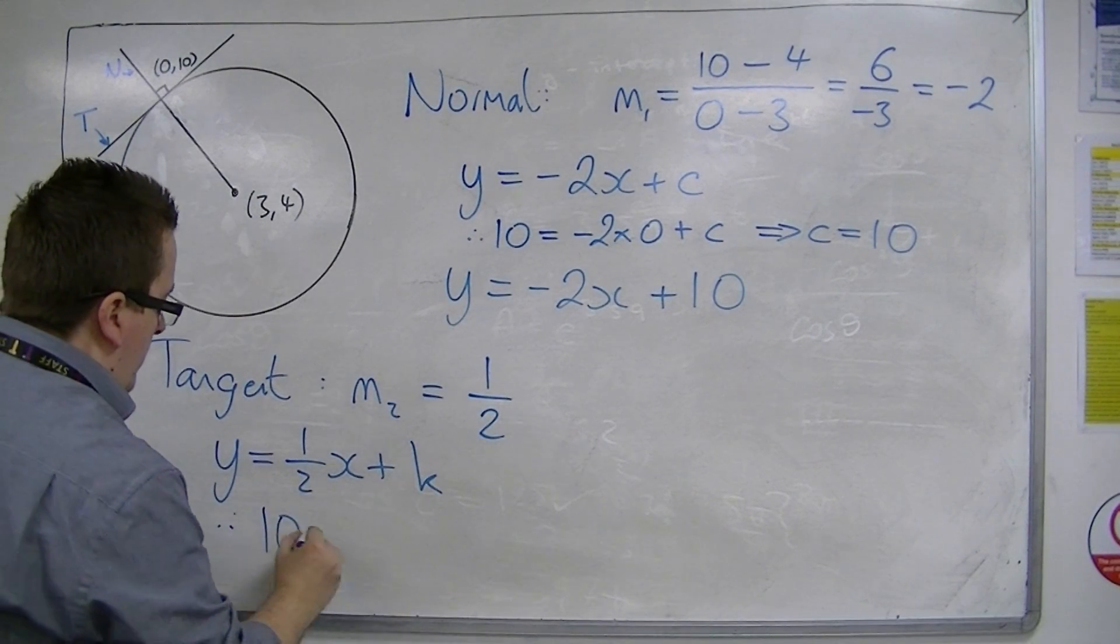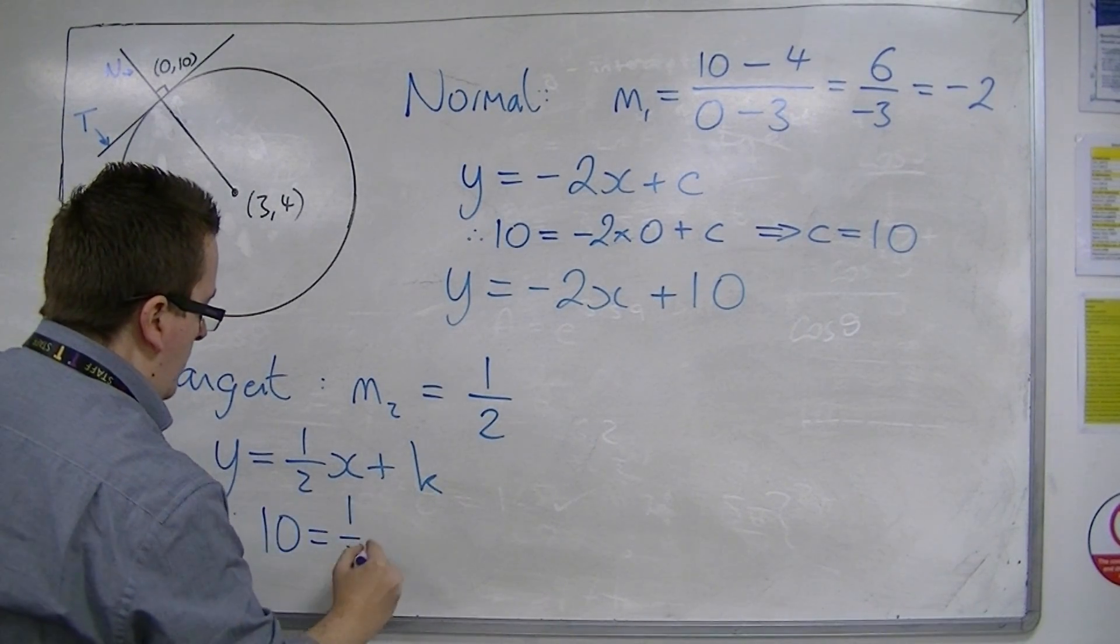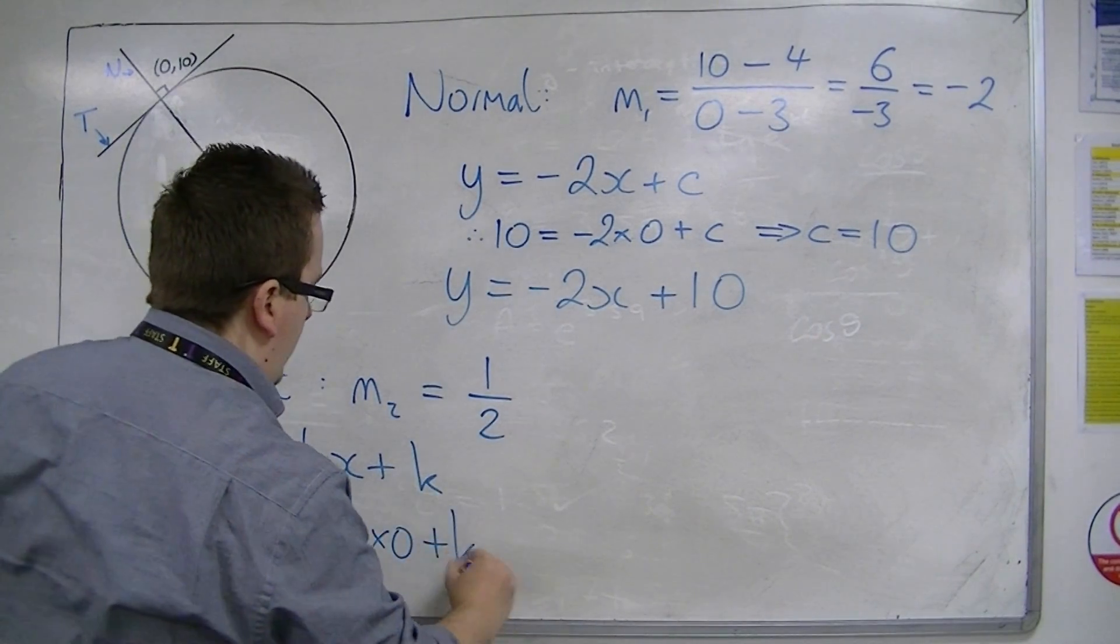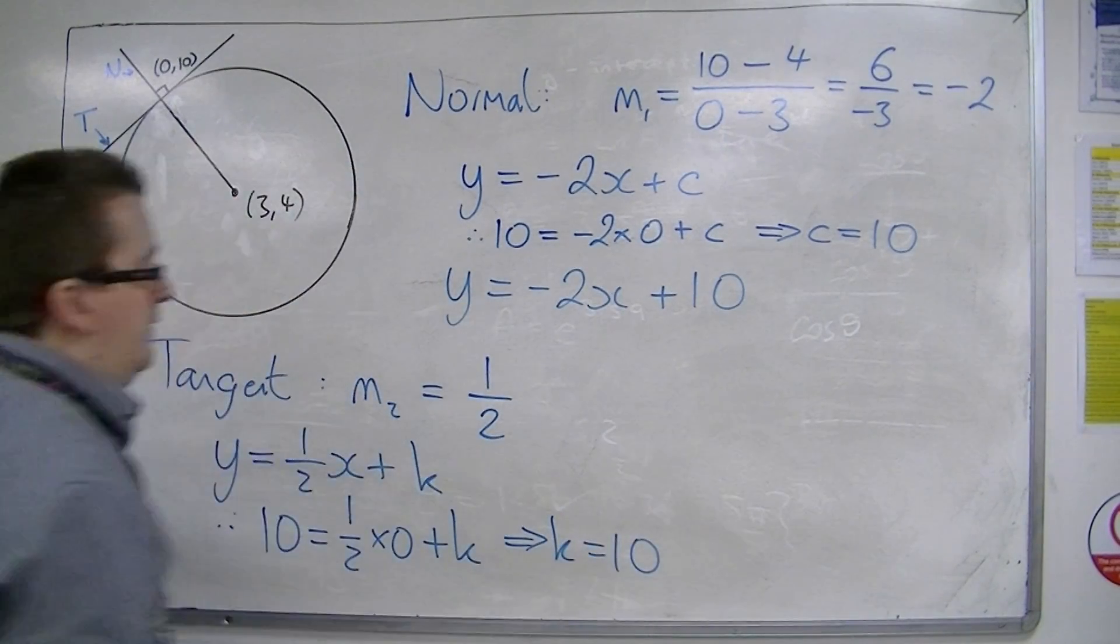So, 10 is equal to 1 half times 0 plus k. So, k is, once again, 10.